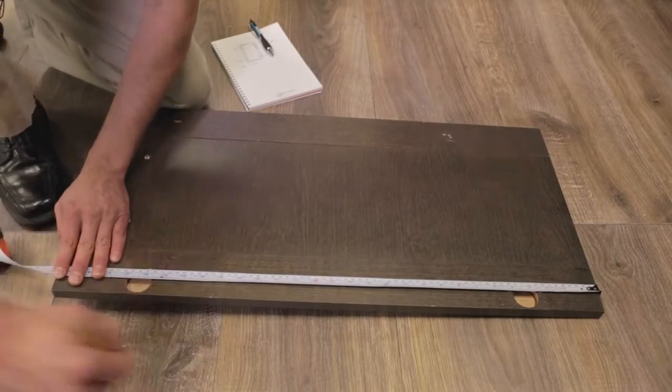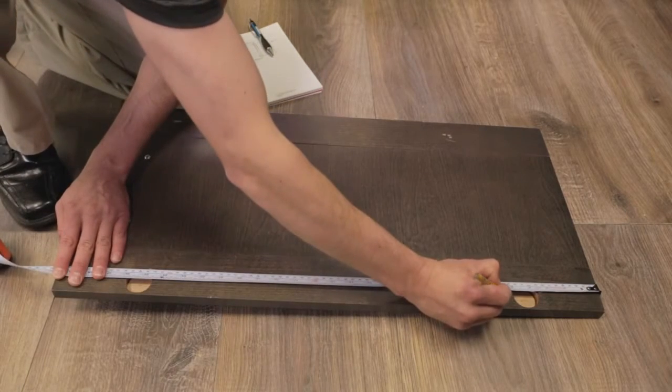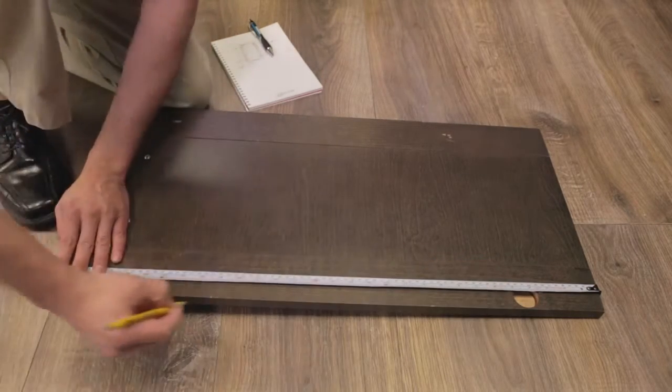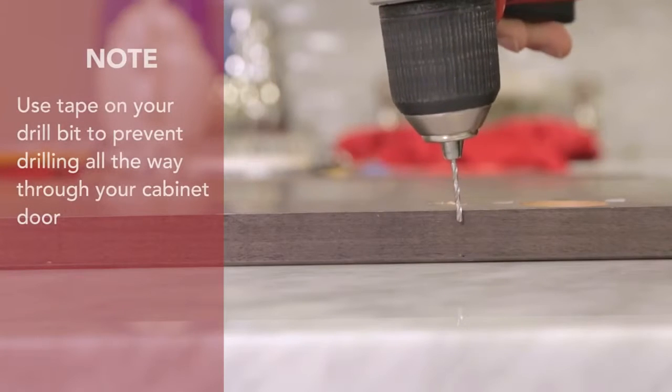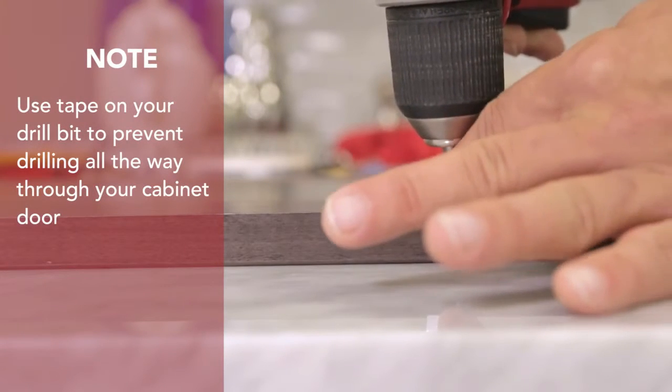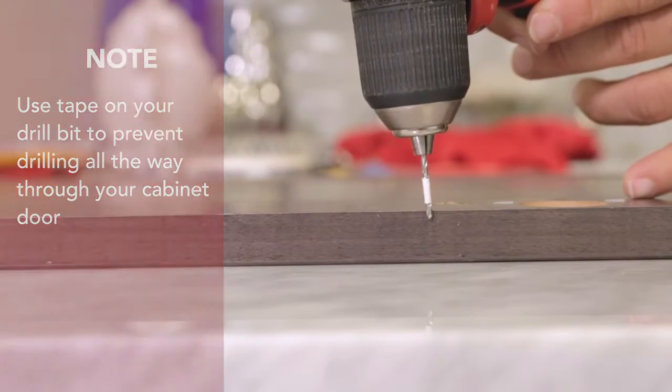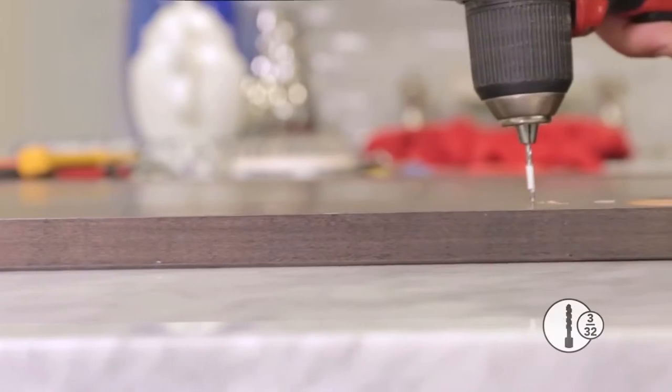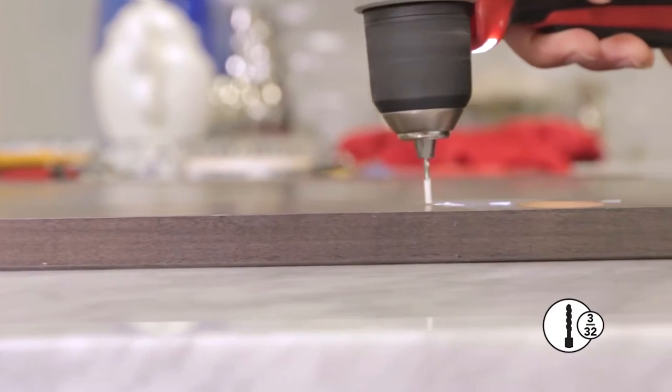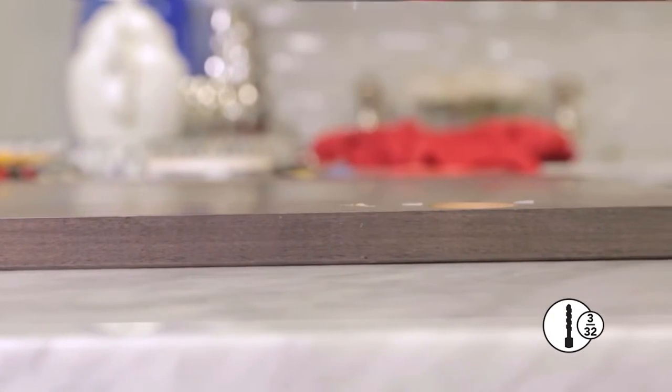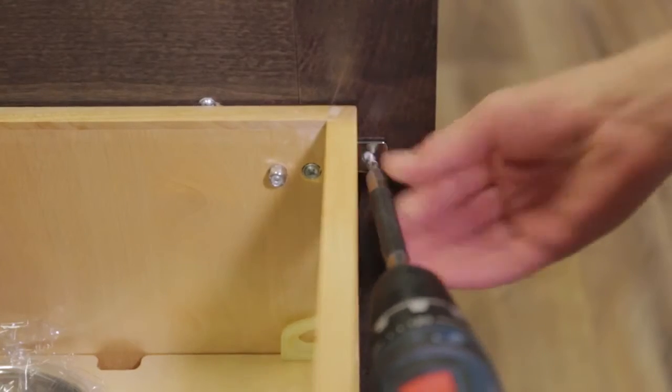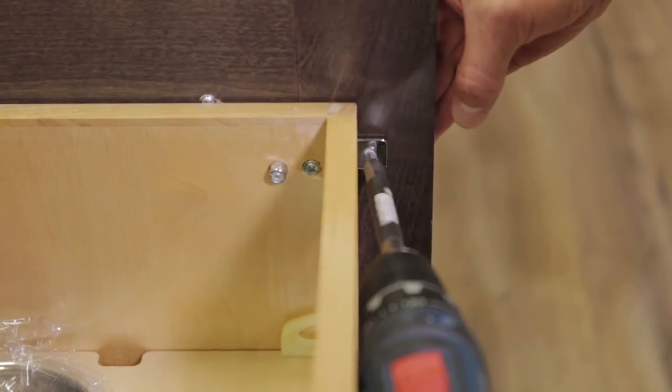Measuring from the bottom of the door, transfer those dimensions to the door. Prior to pre-drilling, it is always a good idea to note the thickness of your door and add some tape to your drill as a guide to keep you from drilling through your door. Now let's pre-drill 3/32 inch pilot holes. Attach the door with four of the supplied number six half inch screws.